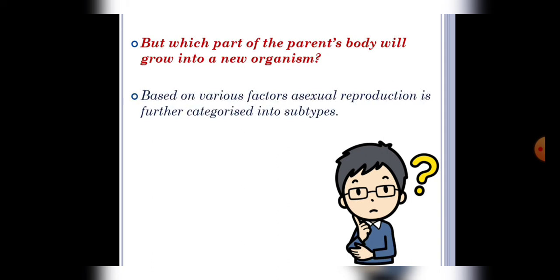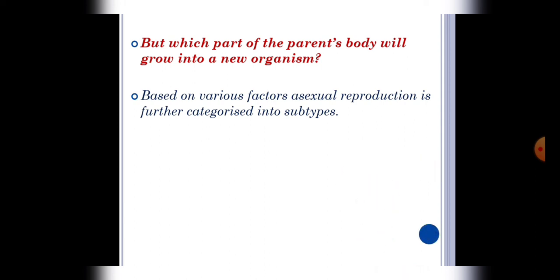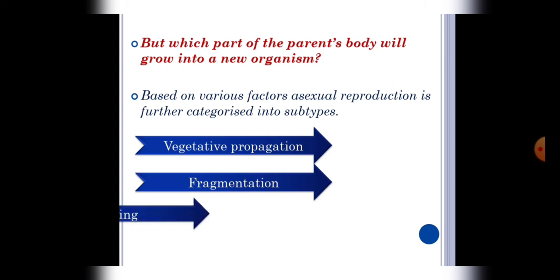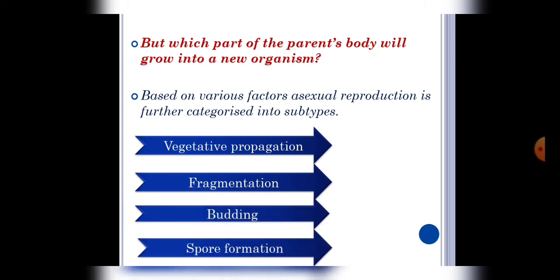Now the question is which part of the parent's body will grow into a new organism? So students, based on various factors asexual reproduction is categorized into four subtypes: vegetative propagation, fragmentation, budding, and spore formation. So in our next video we will talk about these in details.